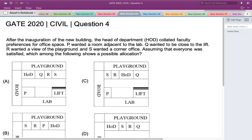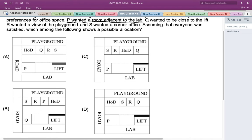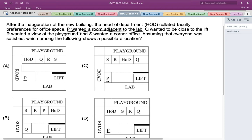The first information given to us is that P wanted a room adjacent to the lab. If I look at the available options, I can see that only options A, C, and D satisfy the above condition, because in option B, Q and lift are the two rooms adjacent to the lab. So the first condition is satisfied by options A, C, and D.